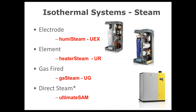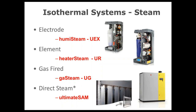The gas-fired humidifier generally handles a much larger load capacity than standalone electrodes — anywhere from 100, 200, 400, up to 600 pounds per hour. From there, we go to a direct steam manifold, which generally taps into a building's existing boiler system. This can also be utilized as a short absorption manifold for standalone humidifiers.